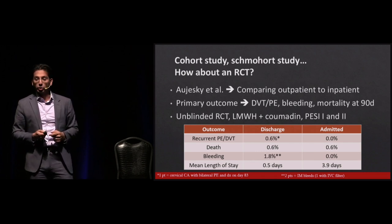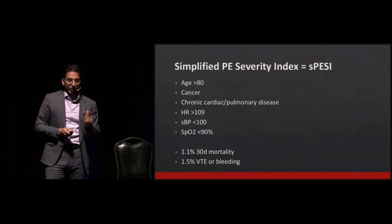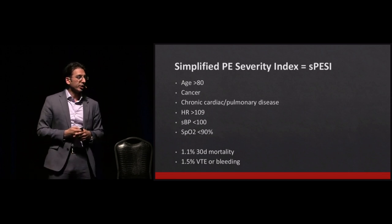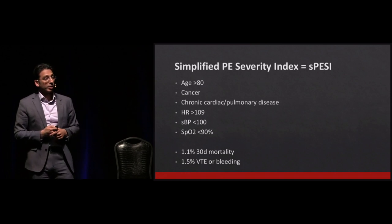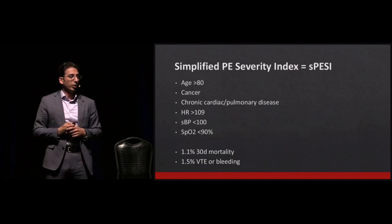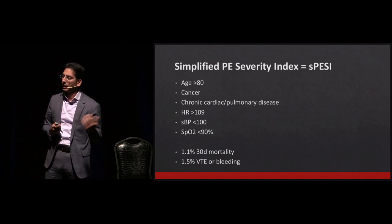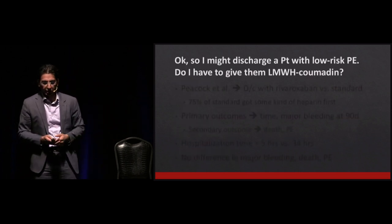So we have a nice RCT using Coumadin and Lovenox. The simplified PESI is available on MDCalc. If you avoid all high-risk criteria, the 30-day mortality is 1.1% and the bleeding rate is 1.5%. Some people use Hestia, some use PESI — just a different scale.